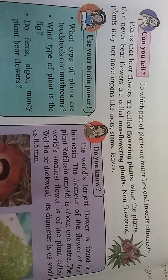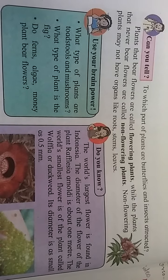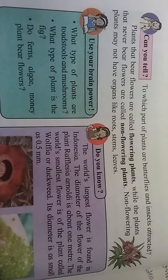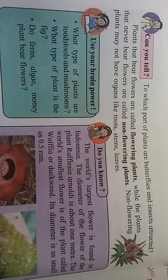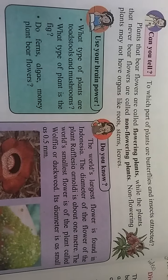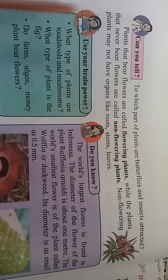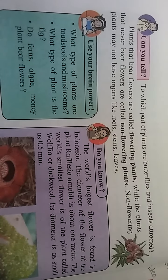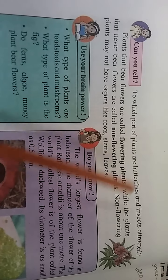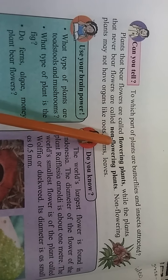Which part of a plant do butterflies and insects get attracted to? Obviously, the flower. Plants that bear flowers are called flowering plants, while plants that never bear flowers are called non-flowering plants.